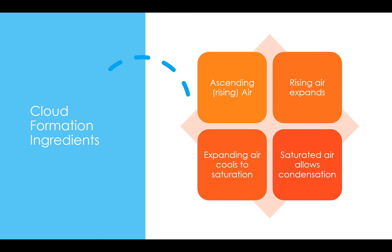Let's first talk about the cloud formation ingredients. In order for a cloud to form, we need some of these factors to come together. The first thing we need is a rising air motion — some kind of ascending or rising air. As that rising air moves upward in the atmosphere, it expands. The expanding air will eventually cool to saturation, meaning the relative humidity is 100%, and that's generally where your temperature and dew point are the same.